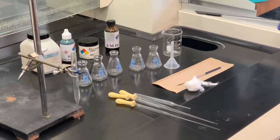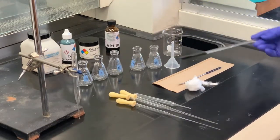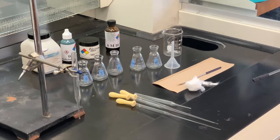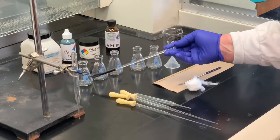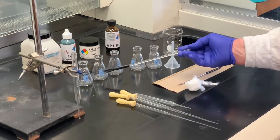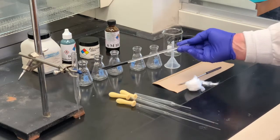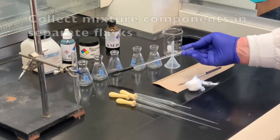And then we'll need several small flasks. I've labeled these. What we're going to separate today is a dye mixture. One is going to have a blue color and I labeled one flask B for blue. The other component is yellow, so I labeled it Y.